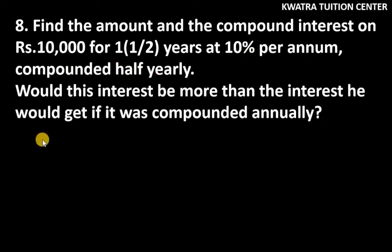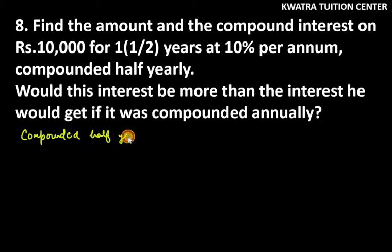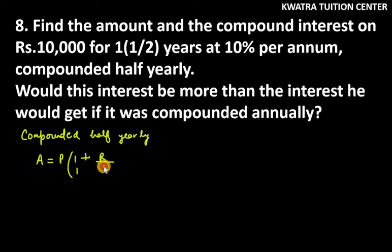So first of all, we have to do compounded half yearly. There is a little change in the formula. The formula is: Amount = Principal × (1 + r/200) raised to the power 2n. Here 200 comes and 2n comes — this is the change.